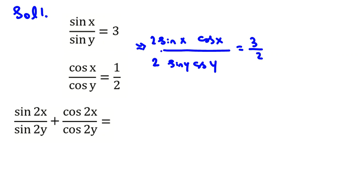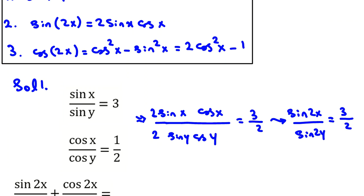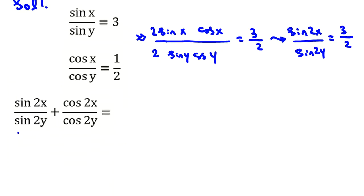If I multiply both numerator and denominator by 2, using the formula sine 2x equals 2 sine x cosine x and sine 2y equals 2 sine y cosine y, the numerator becomes sine 2x and the denominator becomes sine 2y, equal to 3 over 2. So we found the first part: sine 2x over sine 2y equals 3 over 2.